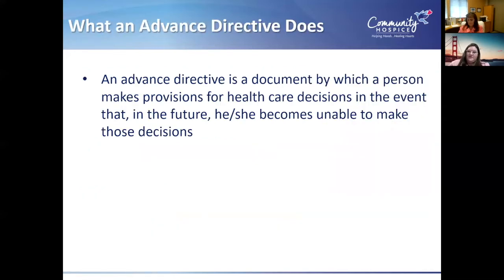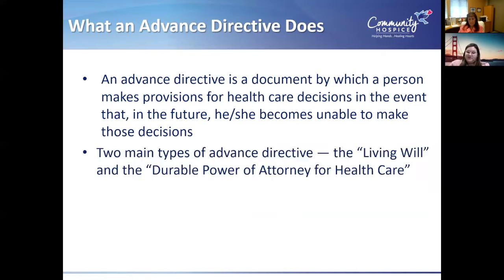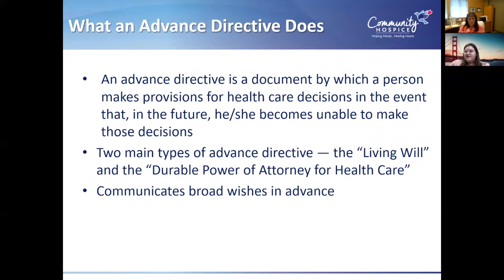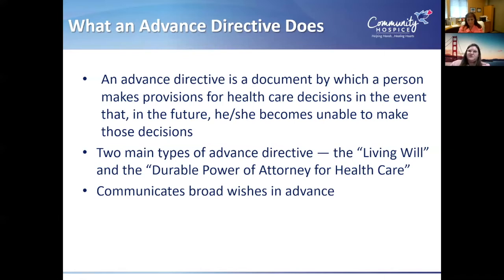An advanced directive is a document that a person uses to make provisions for healthcare decisions in the event that in the future they become unable to make those decisions — either incapacitated or unable to speak for themselves. It outlines their preferences. The two main types are the living will and the durable power of attorney for healthcare. It communicates broad wishes in advance and is executed if the patient is incapable of making decisions for themselves.